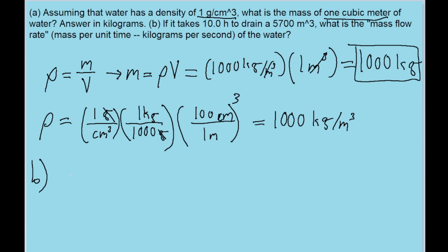For part B, we're looking for something called a mass flow rate, which is described to us as a passage of mass per unit of time. So we need to take the mass of the water we're given and divide it by the amount of time it takes to drain. Once again though, we have a situation where our units aren't consistent with each other. We're told that we're draining 5,700 cubic meters, but we're not told the mass.